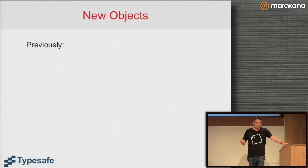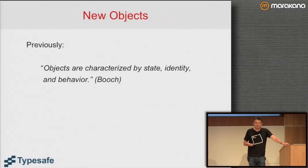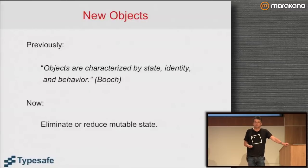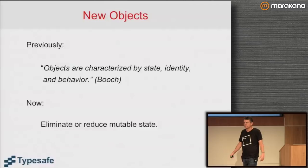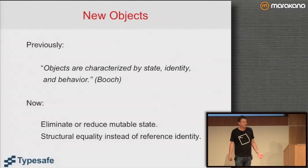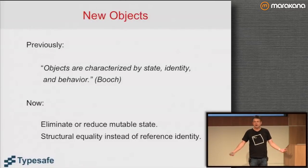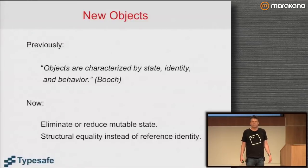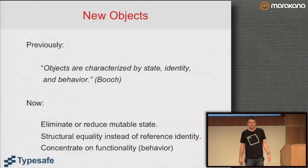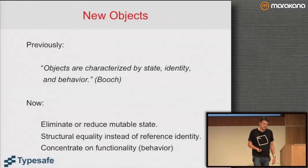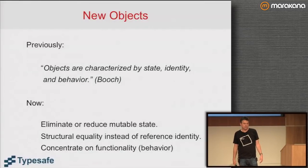If we want to look at objects then we need to revise them a little. Previously objects were characterized by state, identity, and behavior — but if we want to become functional, we have to change that. State is no longer necessarily associated with an object — think of Java's String, which has no mutable state and is a perfectly good object. Structural equality is much better than identity; many of us have been bitten by Java string comparison returning true or false depending on other circumstances. We definitely want to concentrate on functionality.